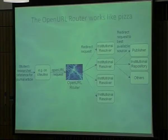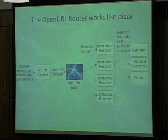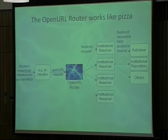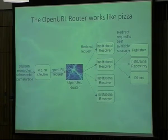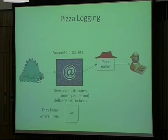OpenURL router is just like pizza. If you're looking for an article, say you find it on a site, the OpenURL router figures out which institutional resolver to send that request to, and the resolver figures out what's the appropriate copy from the appropriate institutional resource and sends you that full text article to the student or researcher.